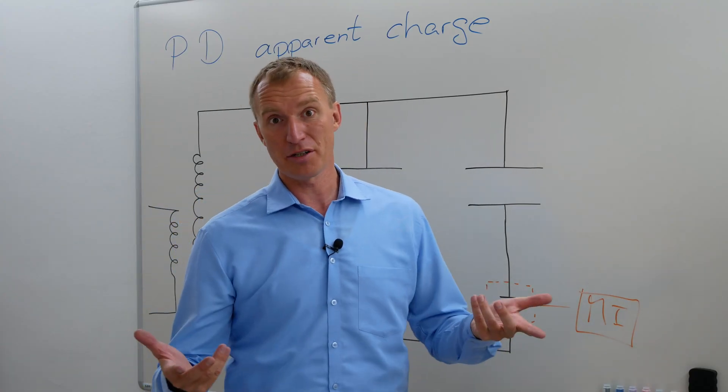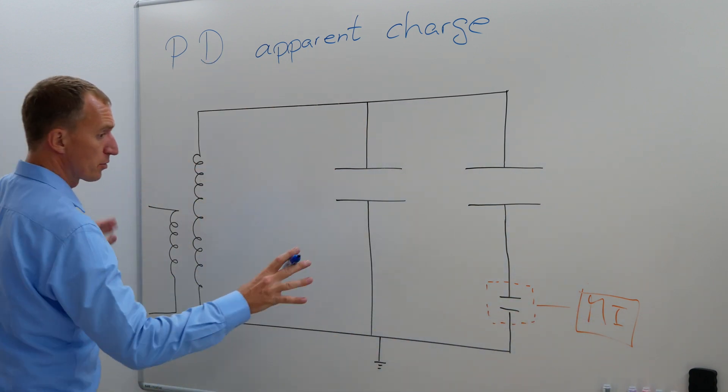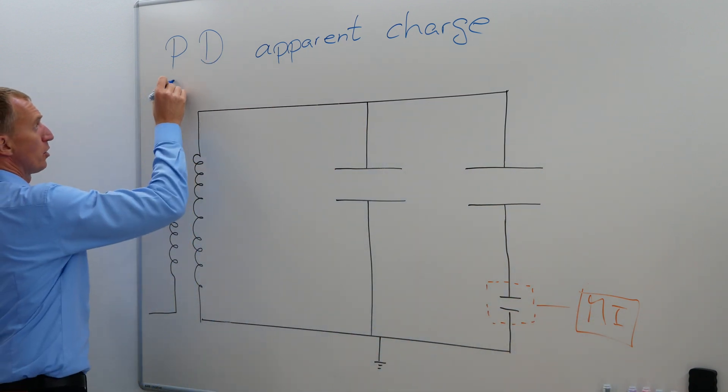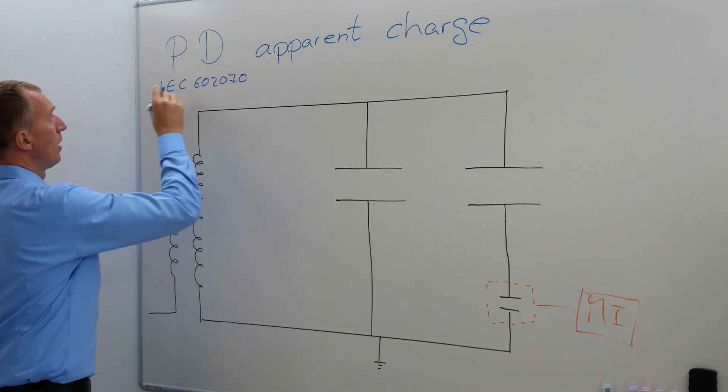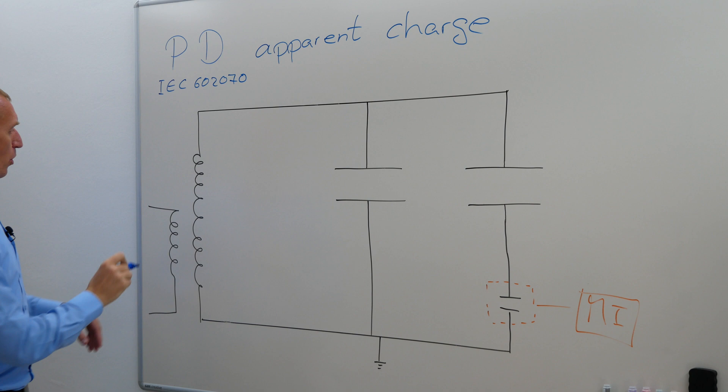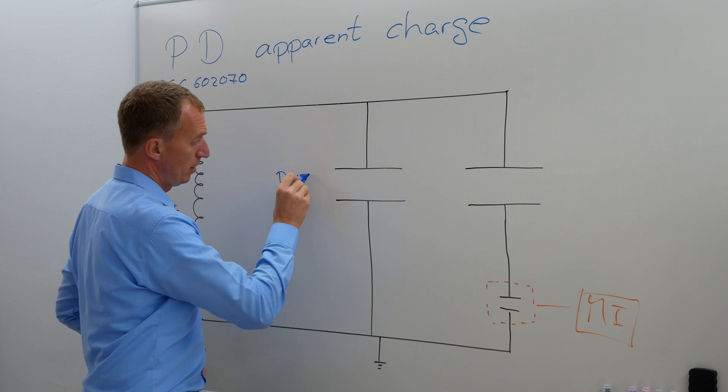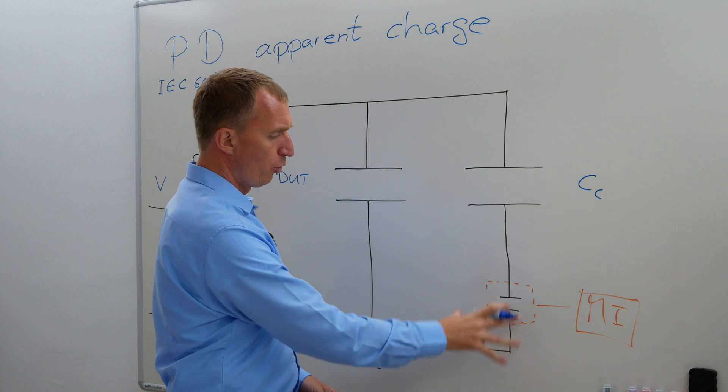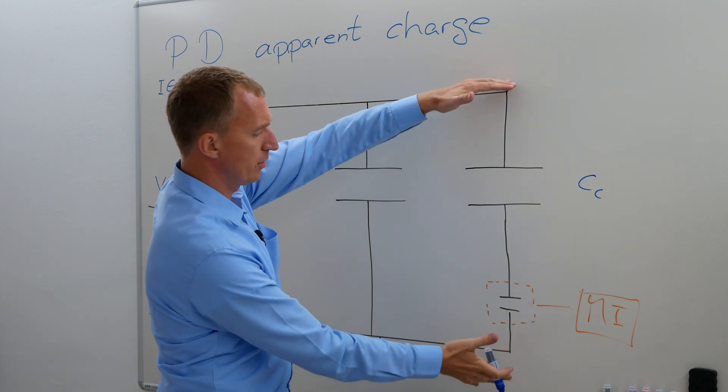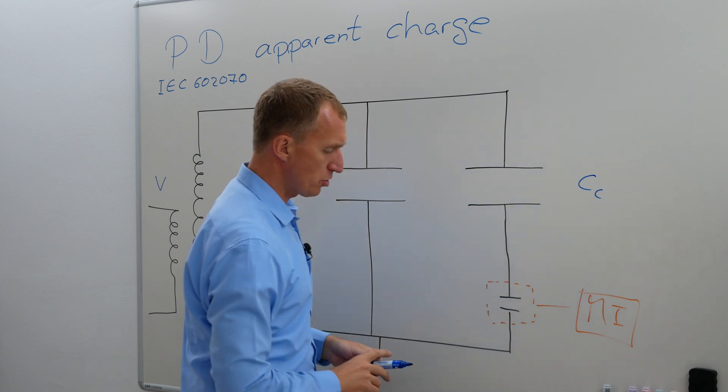In order to measure partial discharges, we need a measurement setup and behind me I've prepared something already. This is our diagram of a measurement setup. This is very close to what we see from the IEC 60270. We have a voltage source here, a high voltage source. We have a device under test, that's our test object and we have a coupling capacitor here. And furthermore, we have our low voltage capacitance here, this is our capacitive divider in order to measure with our measurement instrument to measure partial discharges.